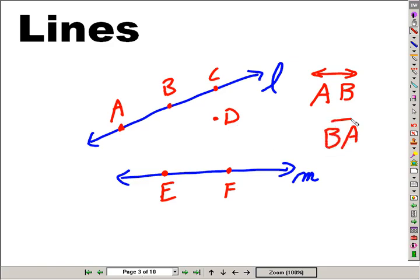You could reverse those letters and say, look at line B, A. So this would be called line EF or line FE.